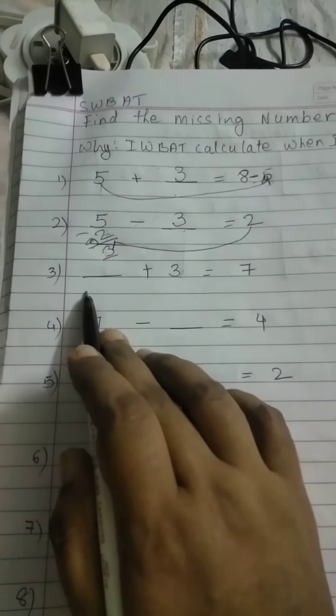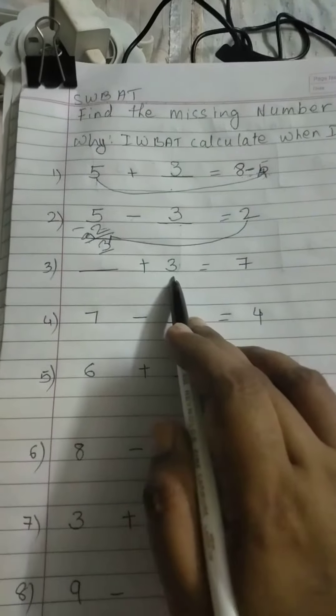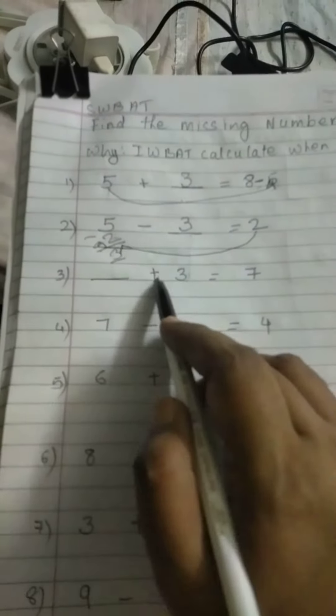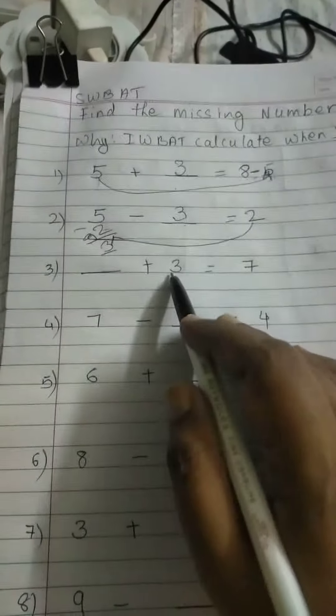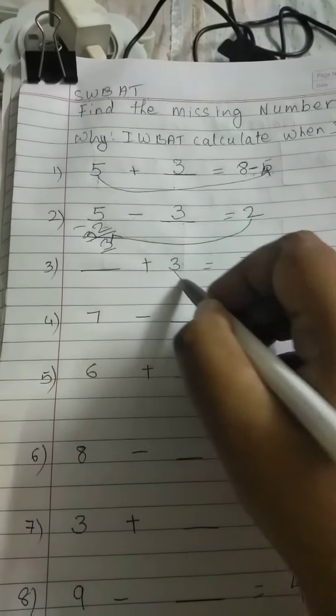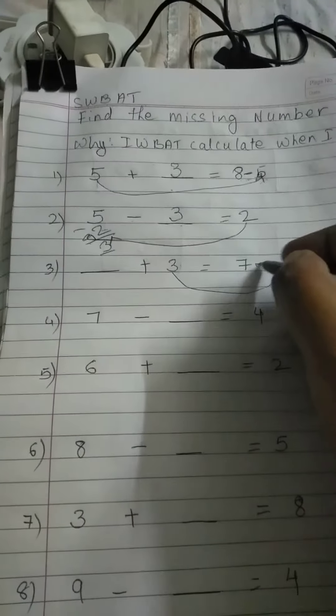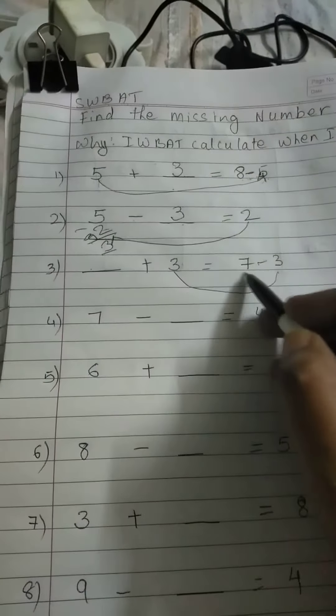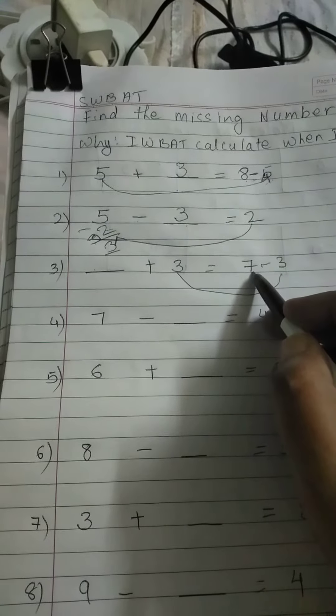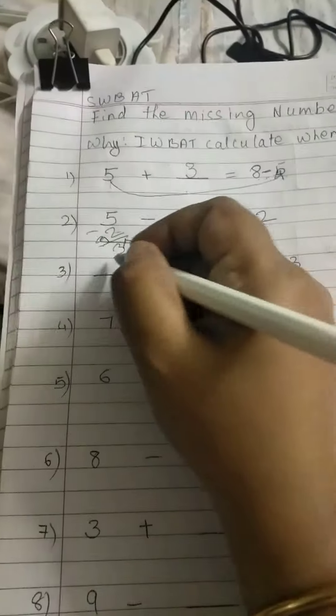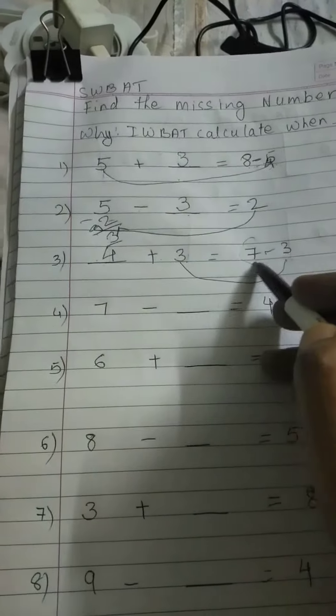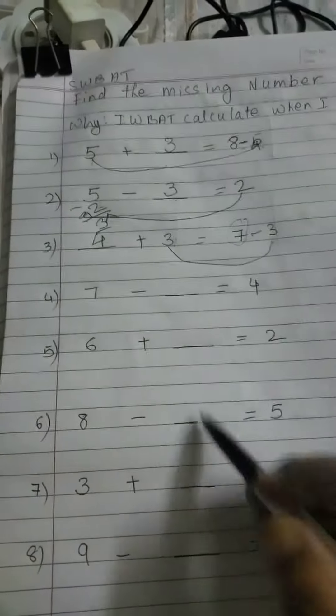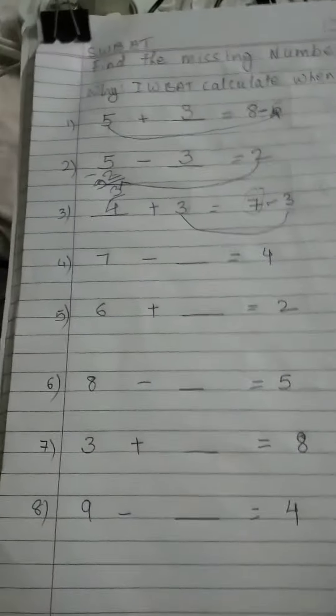Okay now this sum is what dash plus 3 is equal to 7 jab plus sign hota hai toh we have to assume ki jo doosra number hai which will come this side and it will become minus to 7 minus 3 will give me this answer 7 main se 3 nika loo kitna bacha 4 right 4 plus 3 will give me 7 so sign dekho and then solve this sum